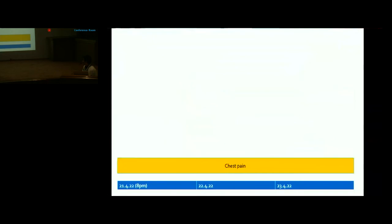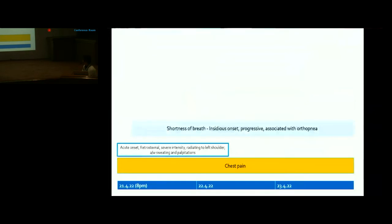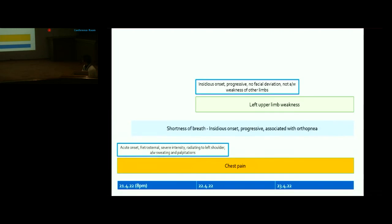History: chest pain starting on 21st April around 8 PM, acute in onset, retrosternal, severe, radiating to the left shoulder, associated with sweating and palpitations. Shortness of breath subsequently developed, progressively increasing and associated with orthopnea. One day into the illness, the patient developed left upper limb weakness — insidious onset, gradually progressive, not associated with facial deviation or weakness of other limbs.